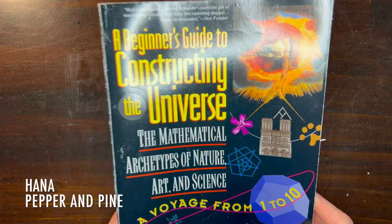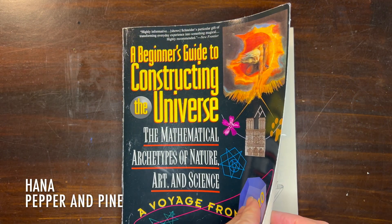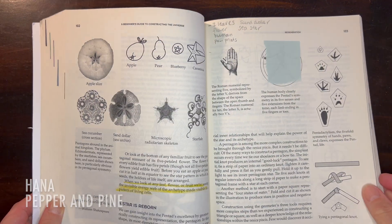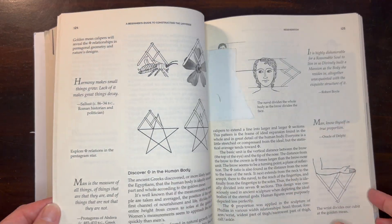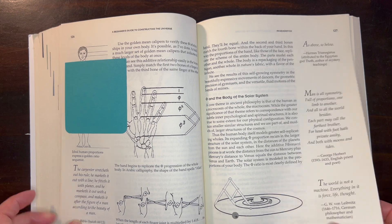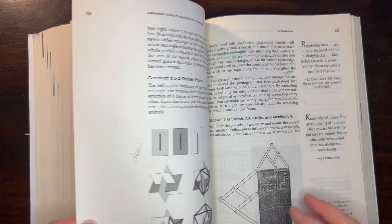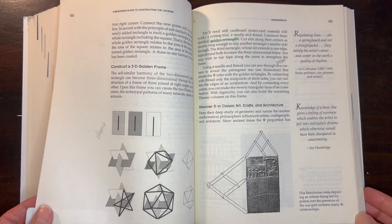Hi everyone, my name is Hannah and this is Pepper and Pine. I have a tutorial to share with you today. We're getting tremendous inspiration from this book called A Beginner's Guide to Constructing the Universe, The Mathematical Archetypes of Nature, Art, and Science, A Voyage from 1 to 10.